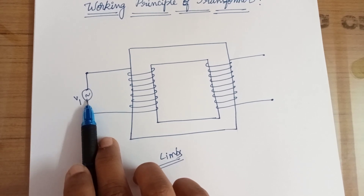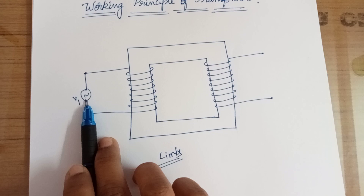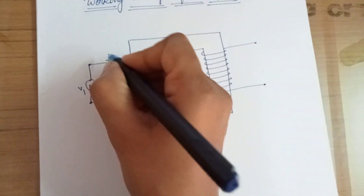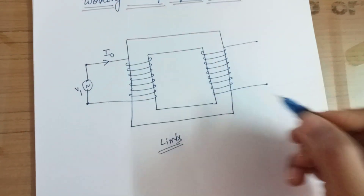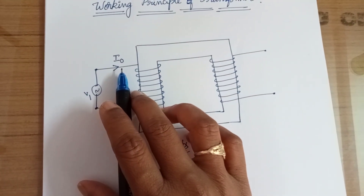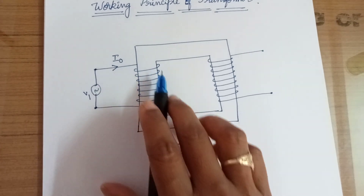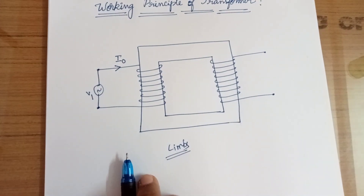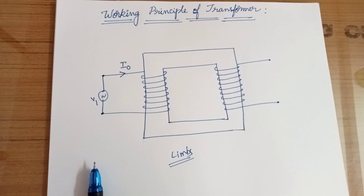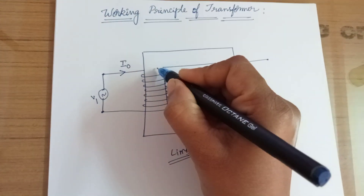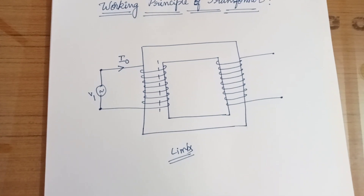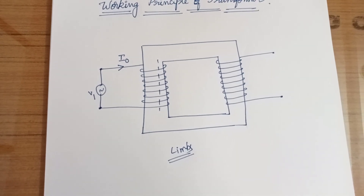The supply voltage is represented with a sine wave, meaning it is a sinusoidal waveform. When we apply the supply voltage, current will flow. Since there is no load on the secondary, only a very small amount of current flows. This current passes through the primary winding. By the right-hand thumb rule — thumb indicates the direction of current and curled fingers indicate the direction of flux lines — some flux will be produced in this primary winding.